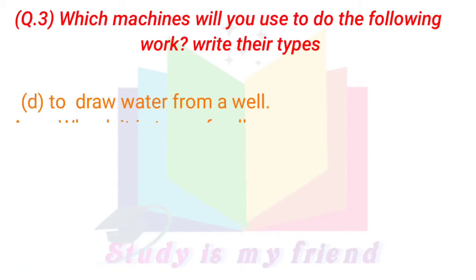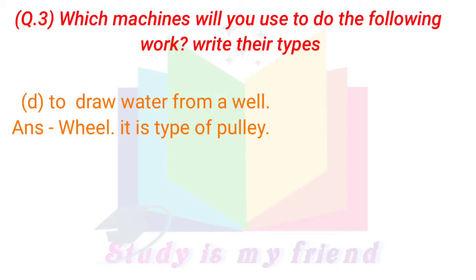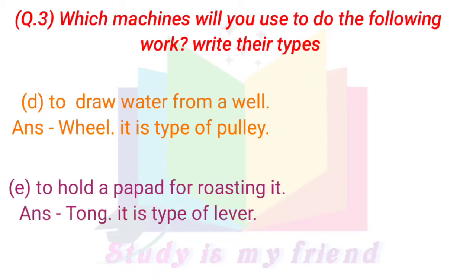D. To draw water from a well. Answer: Wheel. It is a type of pulley. E. To hold a papad for roasting it. Answer: Tongs. It is a type of lever.